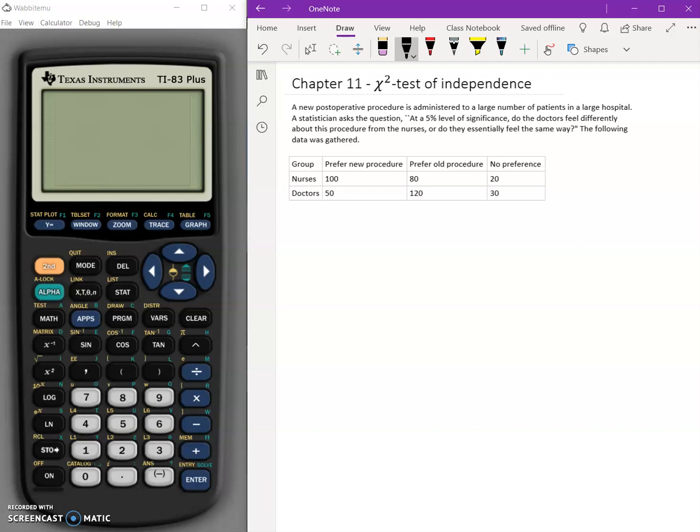So the null hypothesis in this case, we're trying to see, are they independent or are they not? So our null hypothesis says that the occupation and preference are independent of one another.